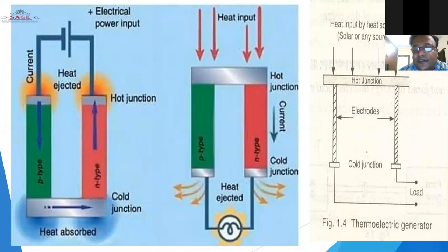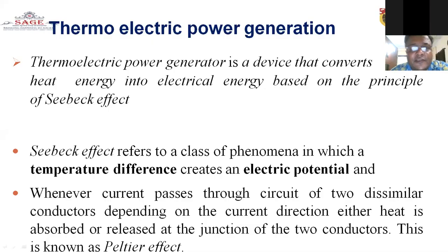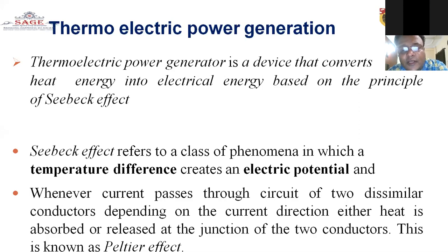This is the thermoelectric power generation: it is a device that converts heat energy into electrical energy based on the principle of the Seebeck effect. It is a class of phenomena in which a temperature difference creates an electrical potential. Whenever current passes through a circuit of two dissimilar conductors, depending on the current direction, heat is either absorbed or released at the junction.